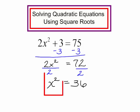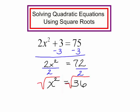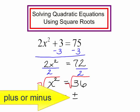x squared will equal 36, and the squared term is completely by itself. I will take the square root of both sides. The square root of x squared is just x. Remember, when you take the square root of both sides, you need plus or minus. And the square root of 36 is just 6.